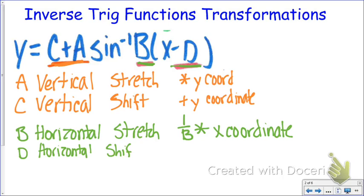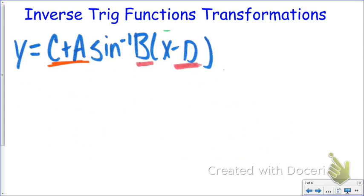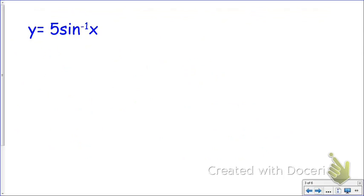D is what I add or subtract to my X coordinate. So two of these transformations involve the X coordinate, and two involve the Y. What we really need to know is what my parent function points are, and then I just apply these transformations to them. We're going to start with the inverse sine parent function and look at the transformations.